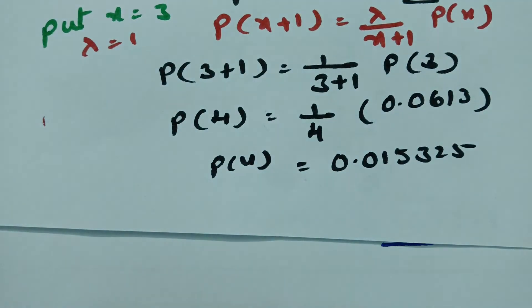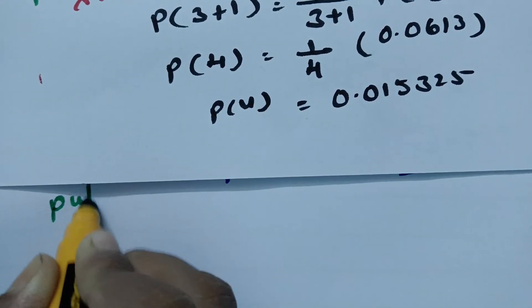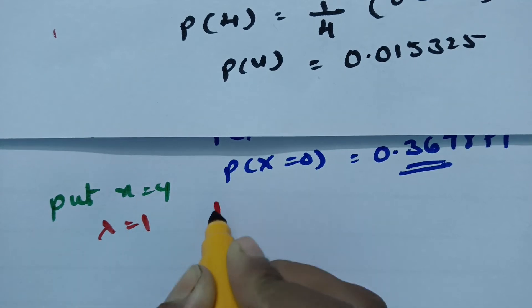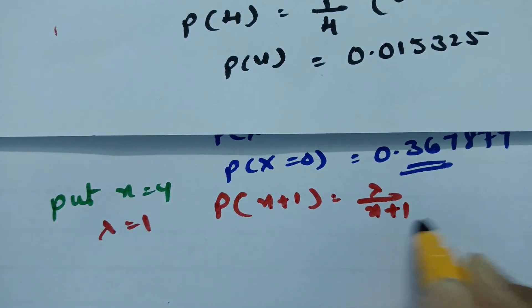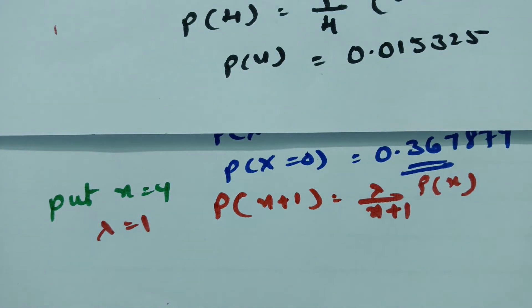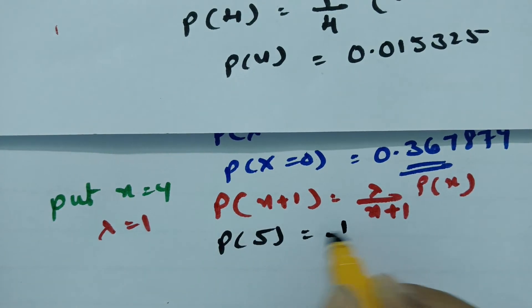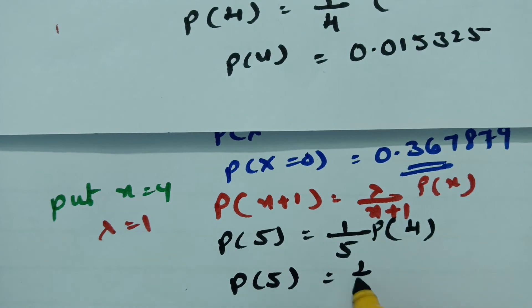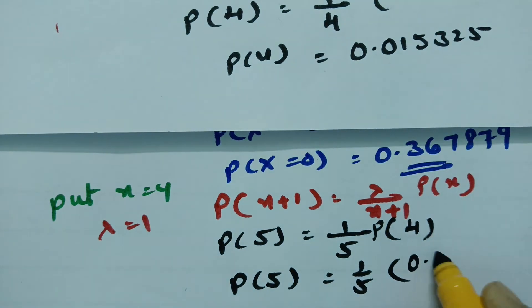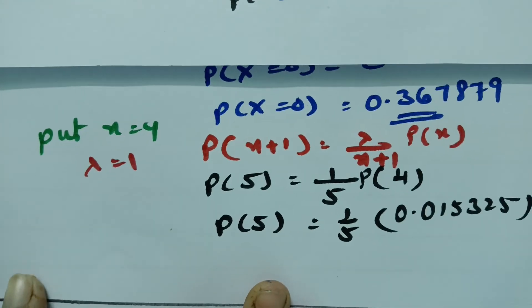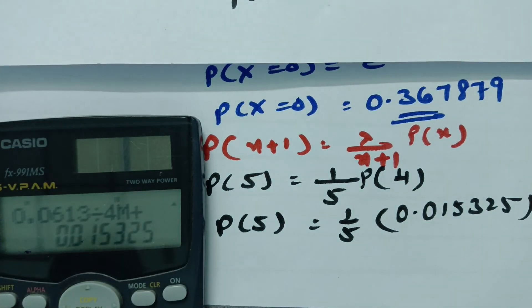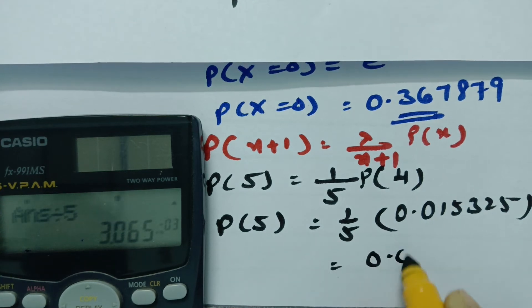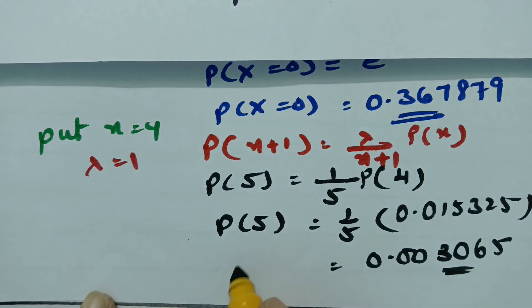Now putting x equals 4 in the recurrence formula with lambda equals 1: probability of 5 equals 1 over 5 times probability of 4. Probability of 4 is 0.015325. So probability of 5 equals 0.015325 divided by 5, which equals 0.003065.